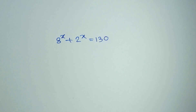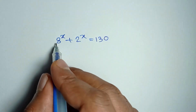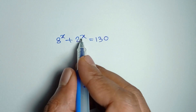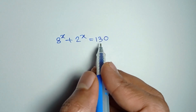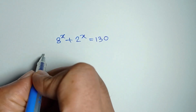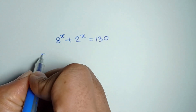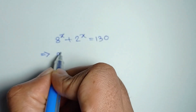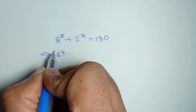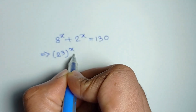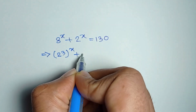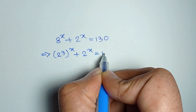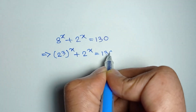Hi everyone, we have to solve 8 to the power x plus 2 to the power x is equal to 130. 8 can be written as 2 to the power 3, whole to the power x, plus 2 to the power x is equal to 130.